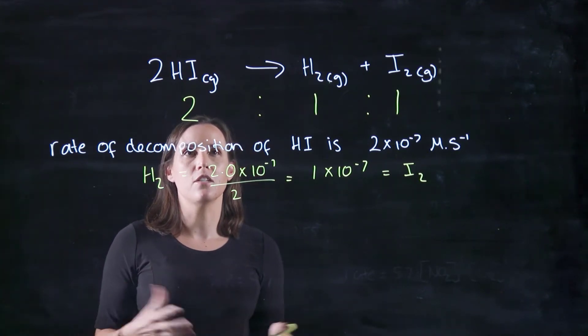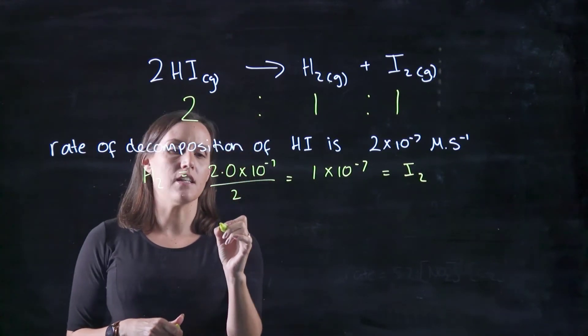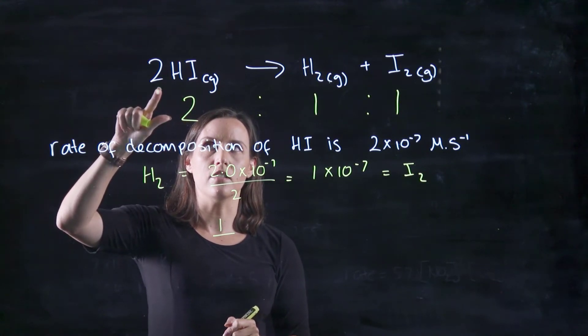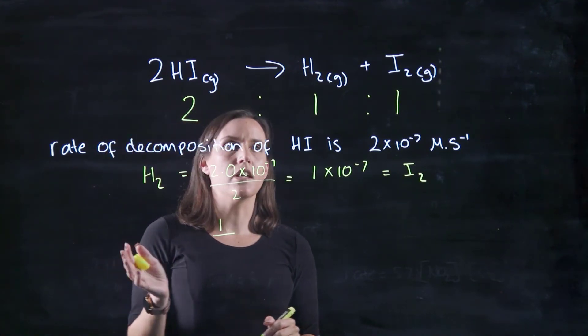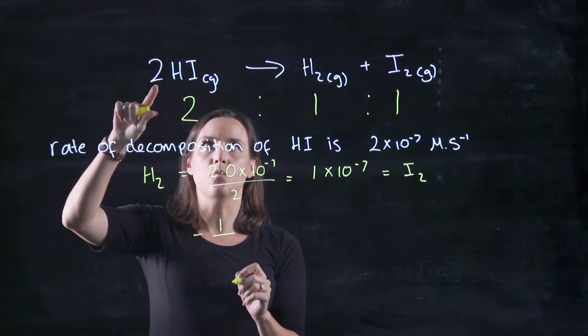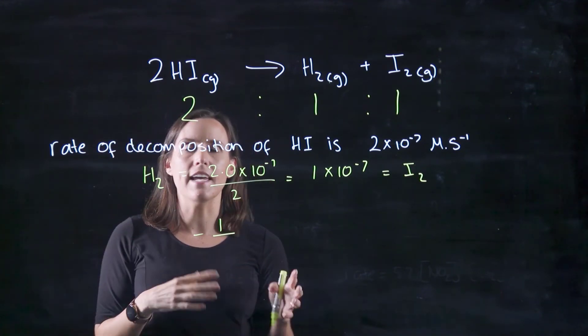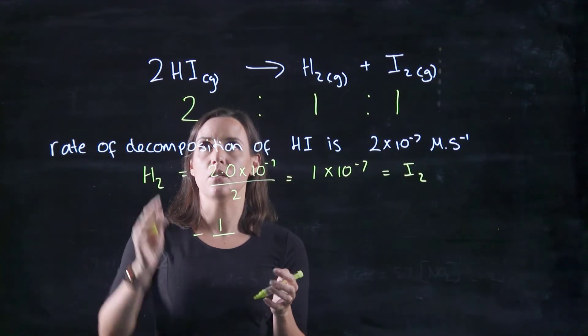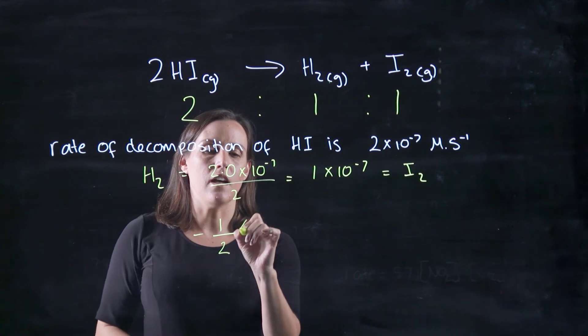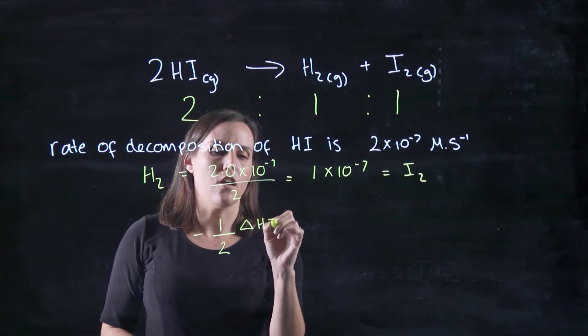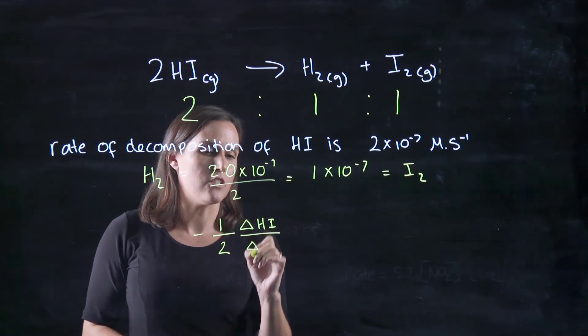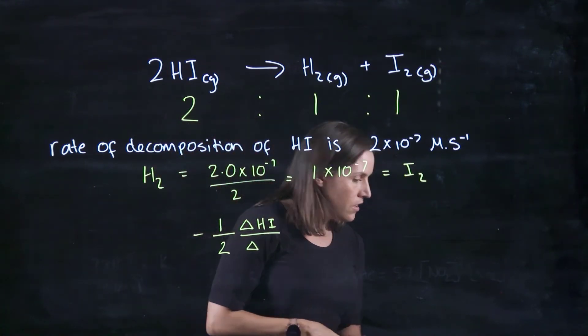Now there's a relationship that we can use for this. So the rate is 1 over the coefficient out the front. So for the decomposition, it would be a negative, and we could generalize this with A's, B's, C's and D's, but I'll write it out for this particular one. So it would be minus a half change of HI over the change in time.